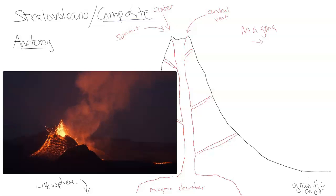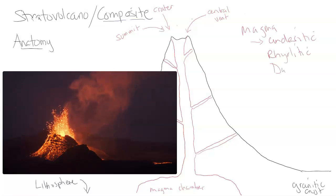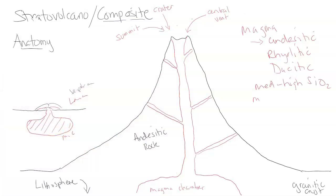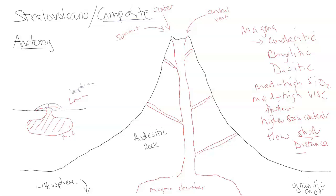Most of the magma that comes through stratovolcanoes is going to be andesitic. Occasionally it's rhyolitic, and one in between is dacitic or dacite magma. These are all generally medium to high silica, which controls viscosity — medium to high viscosity, meaning resistance to flow. So it's going to be thicker magma, attracting more gases, with higher gas content, and it's going to flow a short distance. This short distance means the volcano will grow tall but stay somewhat narrow — still a cone shape, symmetrical, but taller than it is wide.